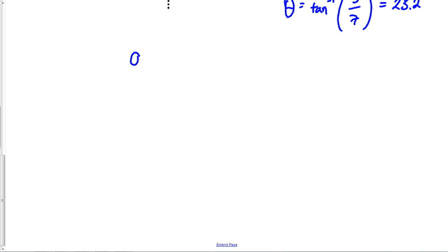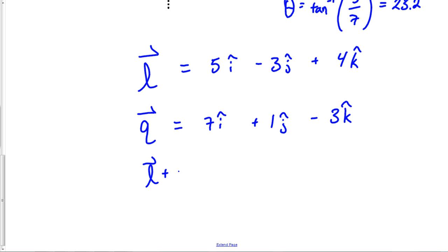What about ijk notation? If you had two vectors - let's call them vector l and vector q - it doesn't matter if you had five vectors. You could have 5i minus 3j plus 4k for one vector, and 7i plus 1j minus 3k for another. What would be l plus q? That's simple: 12i minus 2j plus 1k.